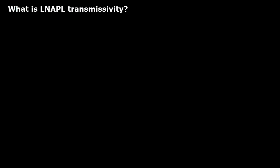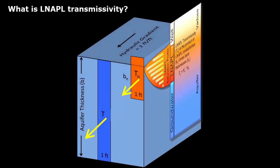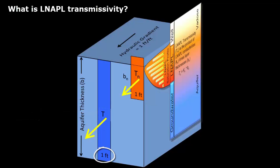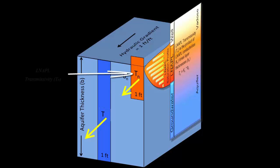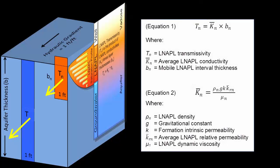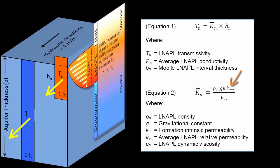What is LNAPL transmissivity, and how does it relate to groundwater transmissivity? Groundwater transmissivity is the volume of groundwater that will flow across a unit width of the full thickness of a given aquifer under a unit hydraulic gradient in a unit amount of time. LNAPL transmissivity is the same thing for LNAPL — the volume of LNAPL flowing across a unit width of the full mobile NAPL interval under a unit NAPL gradient per unit time. Transmissivity is calculated by multiplying average conductivity times aquifer thickness. The conductivity term accounts for different LNAPL density and viscosity and the relative permeabilities of LNAPL and groundwater, since both share the total available pore space.